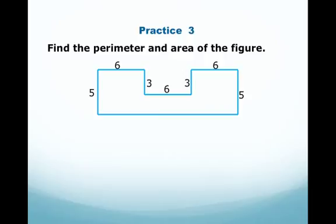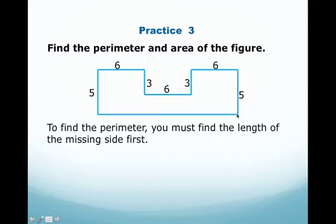Practice 3: Find the perimeter and area of the figure. In order to find the perimeter, we need to add up all the sides, and if you notice, this side right here, we're missing. So the first thing you're going to need to do on this problem is find what the length of this side is. Once you find this length, then you can add all the sides together.